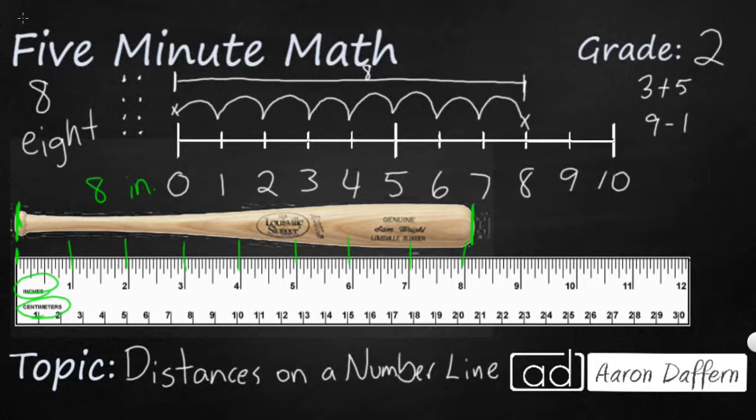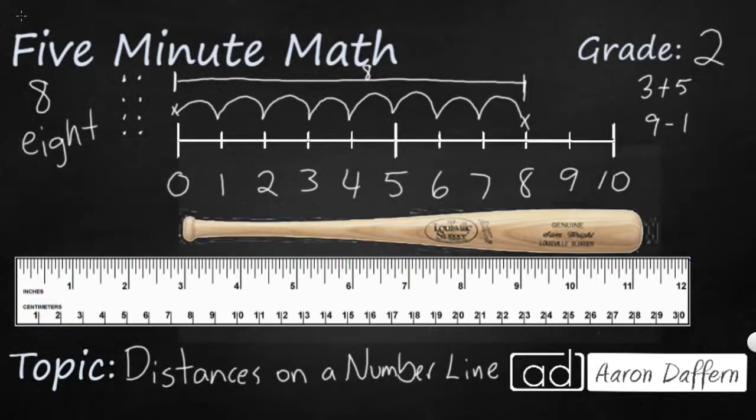Let's see what happens when we shift the baseball bat down and we don't start at the number zero. So we have the same baseball bat, but now as you can see, we've shifted it down to where it's just a little bit past the 11, but we can't say that this baseball bat is 11 inches because we know we just measured it and it was eight inches. All I did was slide it down a little bit.